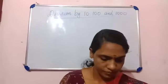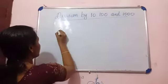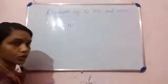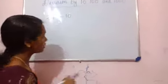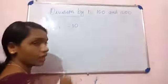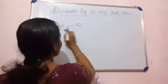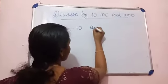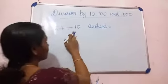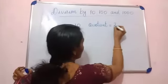Let us check division by 10. We can take 24 divided by 10. Here 24 is the dividend and 10 is the divisor. How many 10s in 24? 2 — so 2 is the quotient.